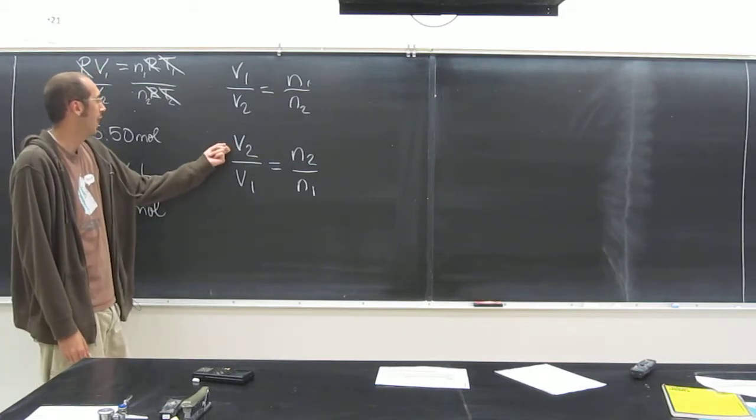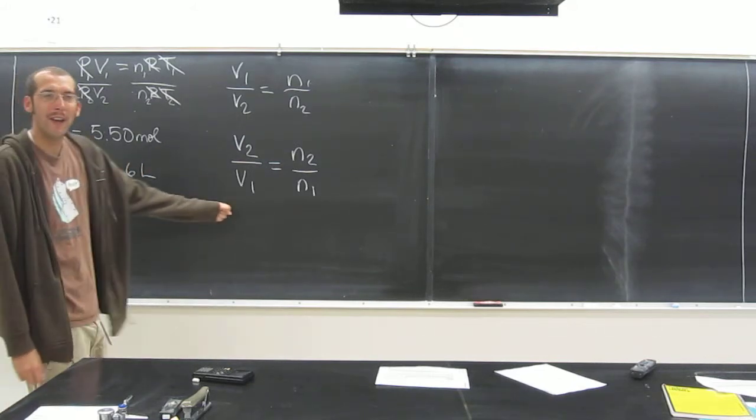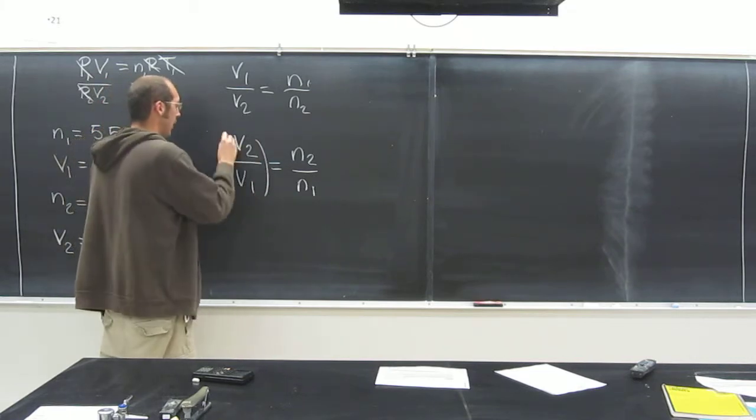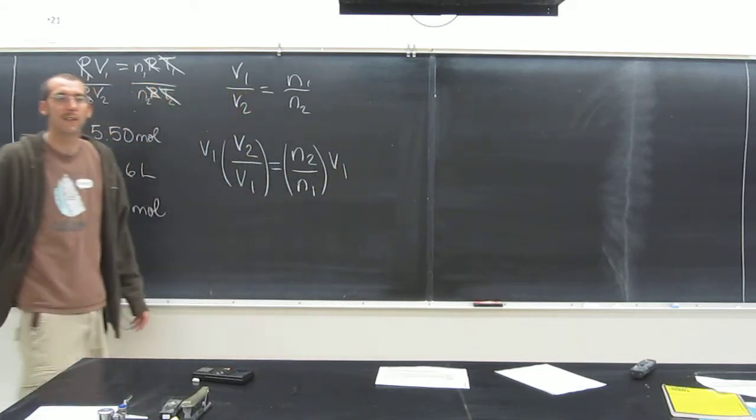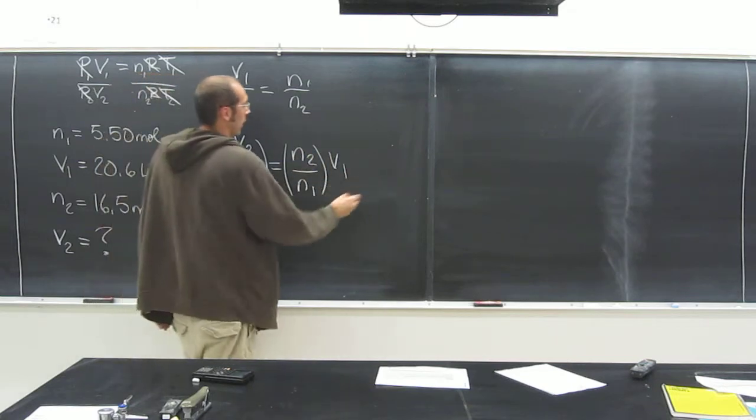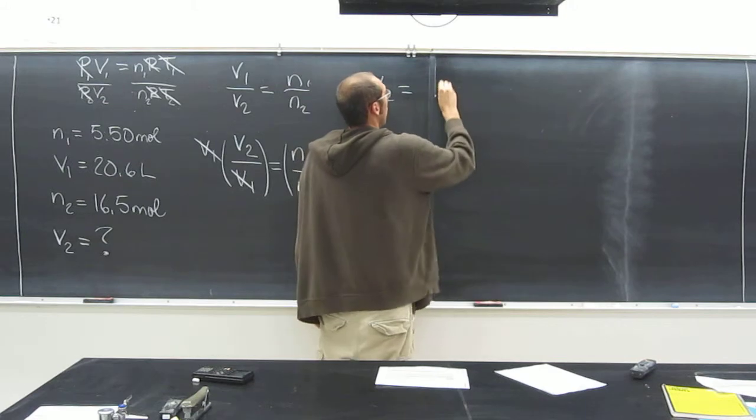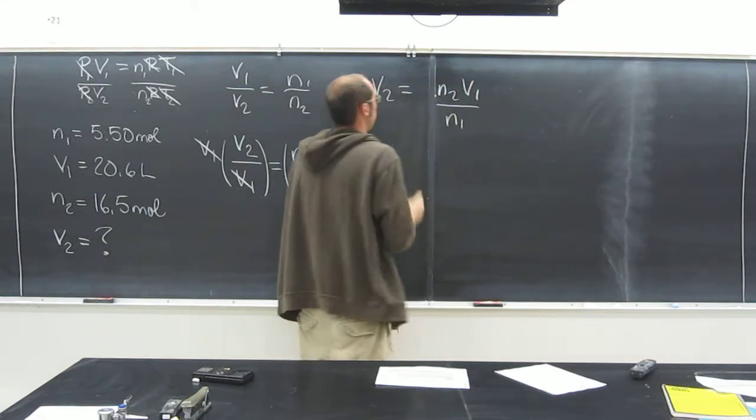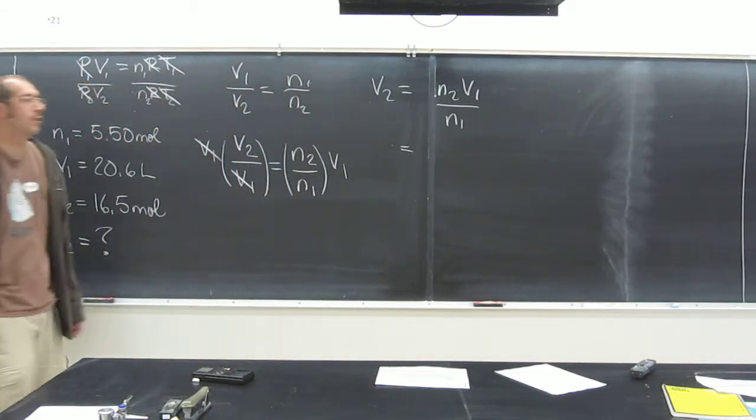Is V2 isolated? Isolated being by itself. No, it's not. We've got to get V1 out of there, right? So how do we get V1 out of there? Multiply by V1. Both sides. Because of course what you do to one side, you've got to do to the other side. Cancel, cancel. And our new equation is V2 equals N2 times V1 over N1. And do you have all of that stuff? Yep.